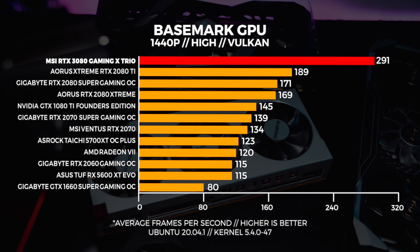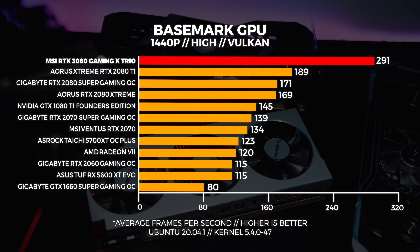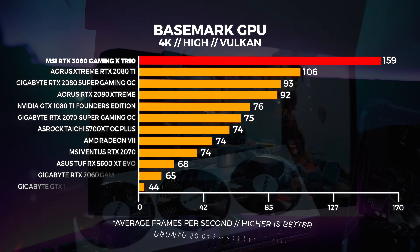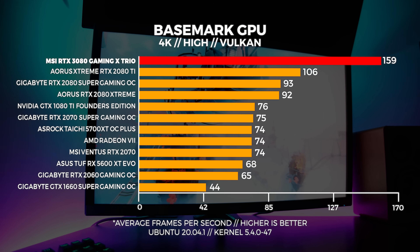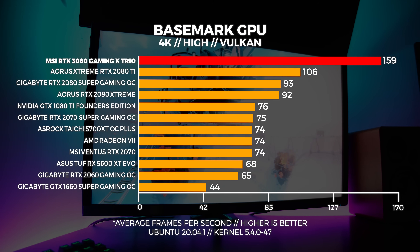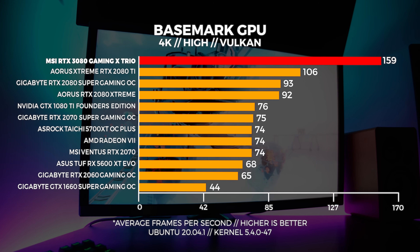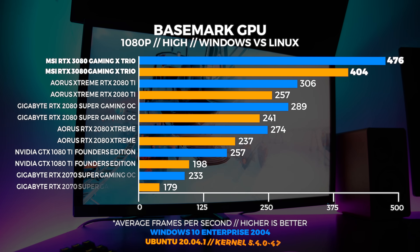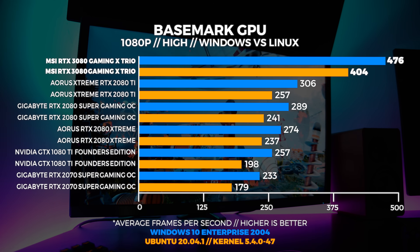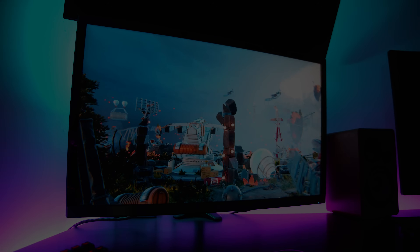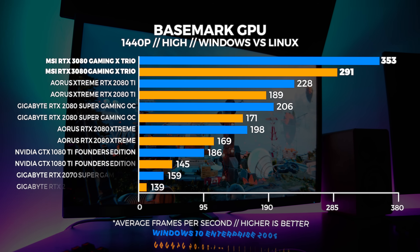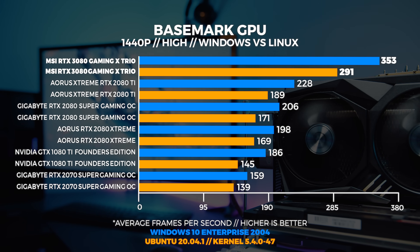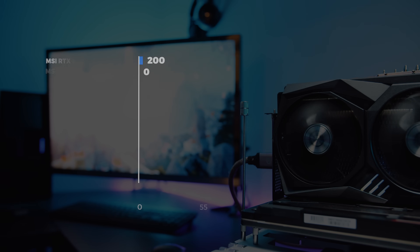We're seeing the same type of uplift at 1440p with the 3080 absolutely dominating in Linux as well. And lastly in 4K we're seeing the same thing again, but if we pivot and look at the comparisons, you'll see that unlike Shadow of the Tomb Raider in Linux, Basemark's Vulkan performance falls behind Windows. This is a pretty important and polarizing comparison because it shows us that game engines and optimizations play a huge role in how something performs — it's basically a lesson in limiting your own expectations.